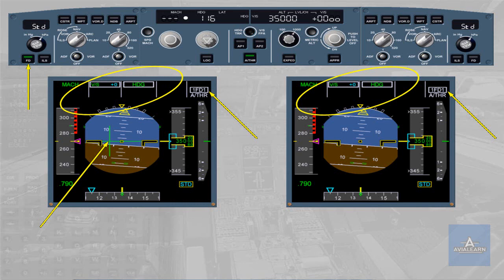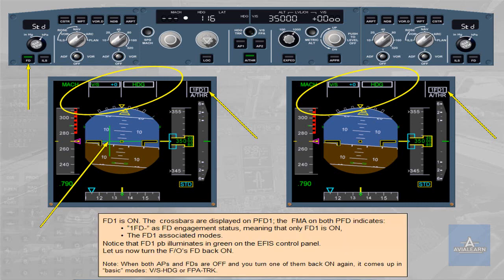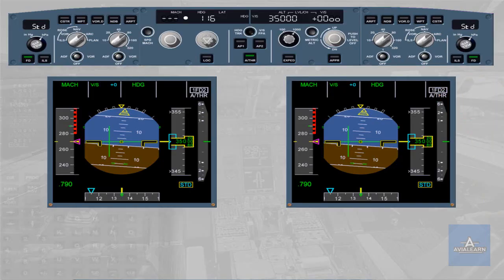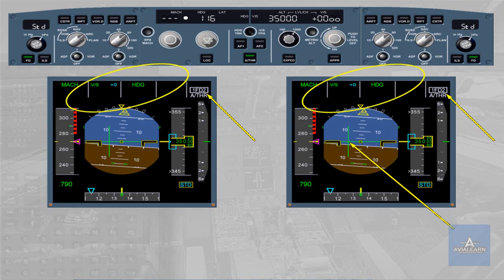Let us now turn the first officer's flight director back on. Note: when both autopilots and FDs are off and you turn one of them back on again, it comes up in basic modes — vertical speed and heading, or flight path angle and track. Both FDs are now on. The crossbars are displayed on PFD 2. Both FMAs indicate '1FD2' as flight director engagement status, meaning that both FDs are on.